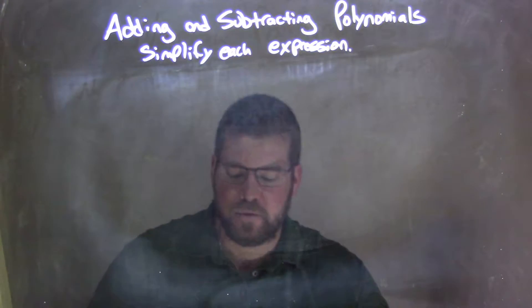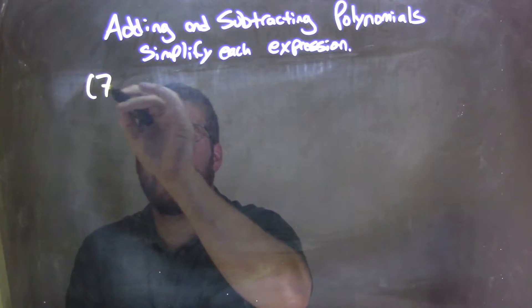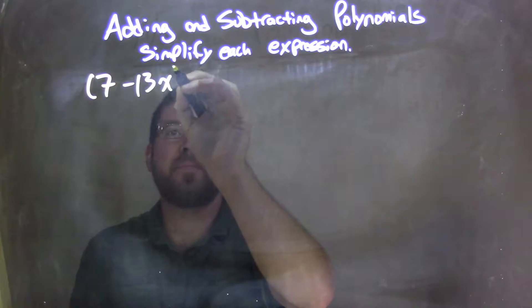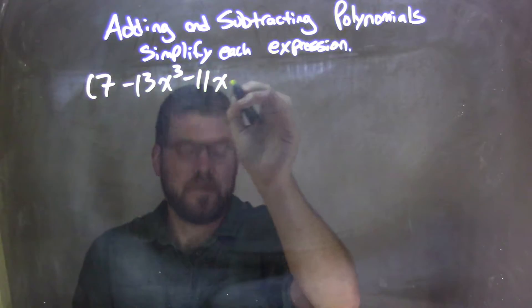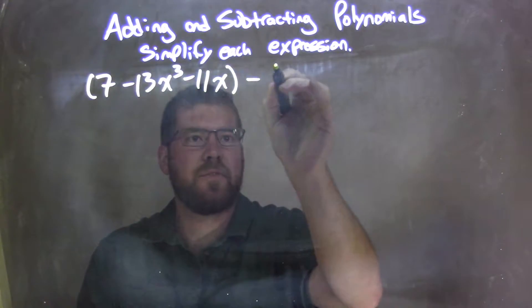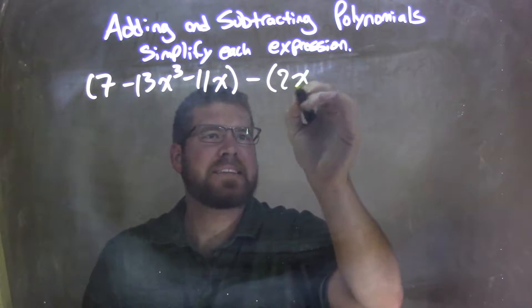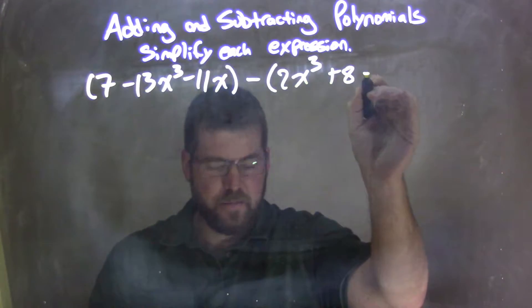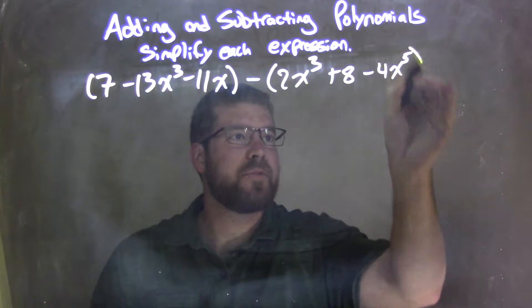So if I was given this polynomial, parentheses, 7 minus 13x to the 3rd minus 11x, end parentheses, new parentheses, 2x to the 3rd plus 8 minus 4x to the 5th.